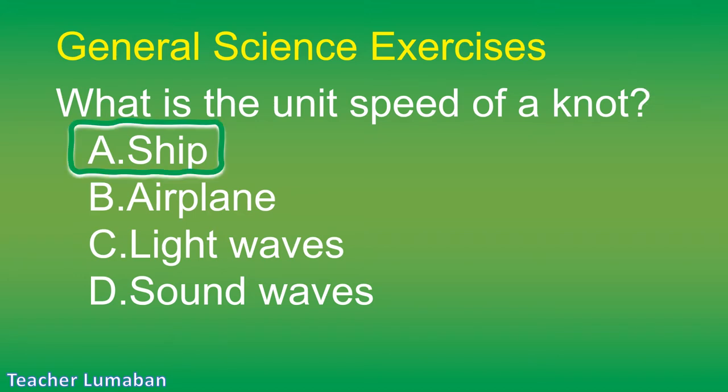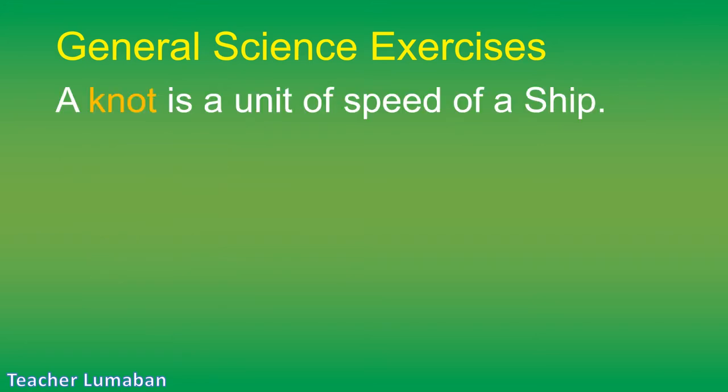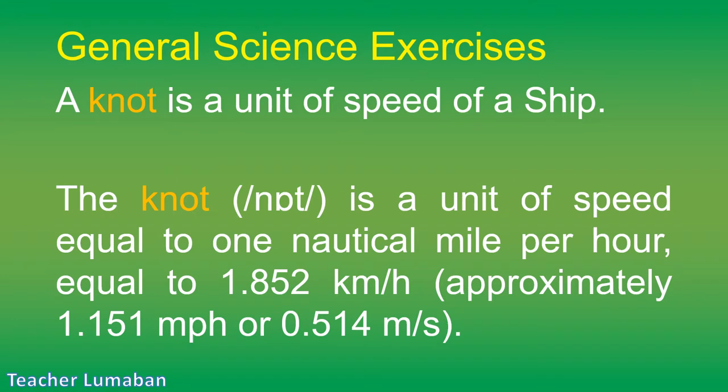The correct answer is Letter A: ship. A knot is a unit of speed of a ship. The knot (symbol: kt) is a unit of speed equal to 1 nautical mile per hour, equal to 1.852 kilometers per hour, approximately 1.151 miles per hour or 0.514 m/s.